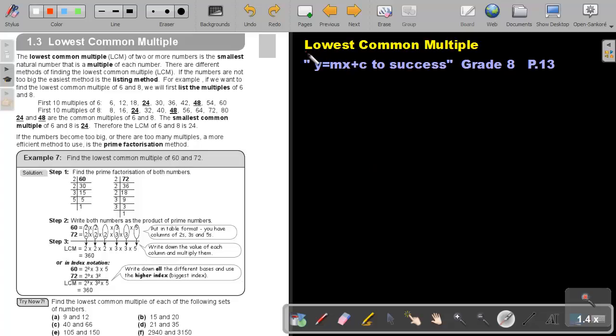Part 9: The lowest common multiple. You will find this on page 13 in the Namibian Mathematics Grade 8 textbook Y equals MX plus C to success. Let's first go through the theory. The lowest common multiple of two or more numbers is the smallest natural number that is a multiple of each number. There are different methods of finding the lowest common multiple.